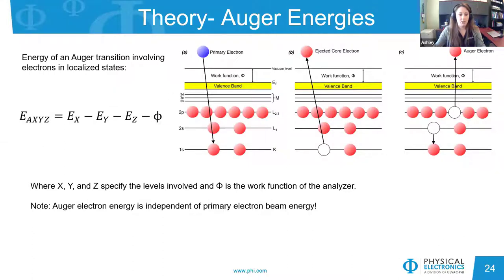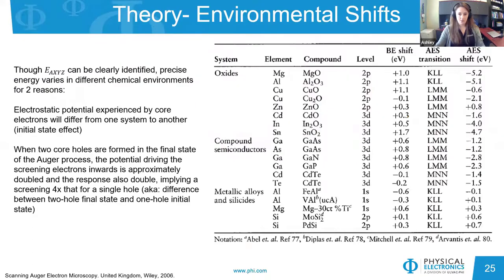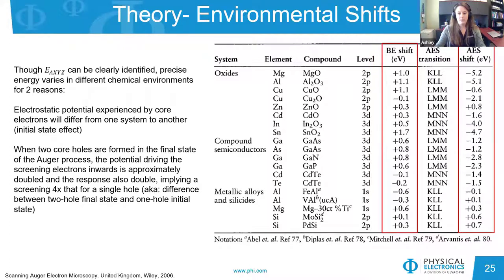Phi in the equation represents the work function of the analyzer. Although calculating the kinetic energy of the Auger electron seems relatively straightforward, energy shifts are expected any time there's a charge transfer from one atom to another. In ionic bonding, the net electron transfer causes core level electrons of electronegative elements to shift to lower binding energies and those of electropositive elements to shift to higher binding energies. The result is often a shift of several electron volts in the Auger peaks compared to their zero valence states. While an energy shift of a few electron volts away from the elemental standard would be of great importance in XPS, it leaves the Auger analyst rather unconcerned.